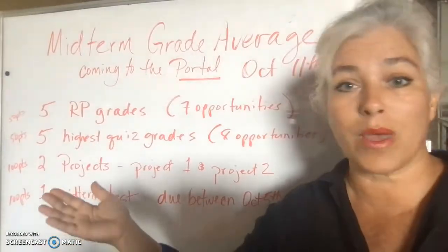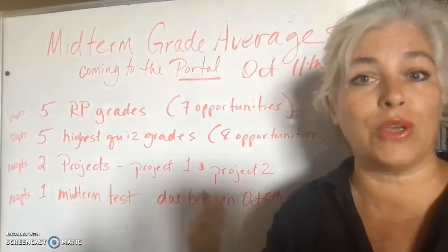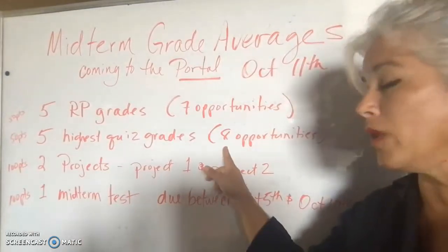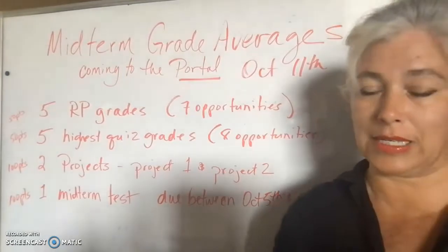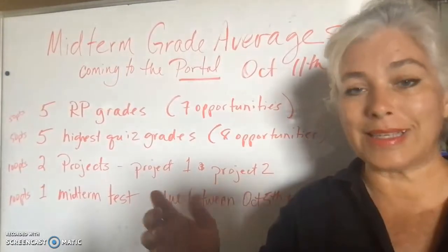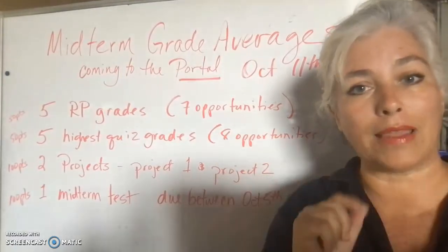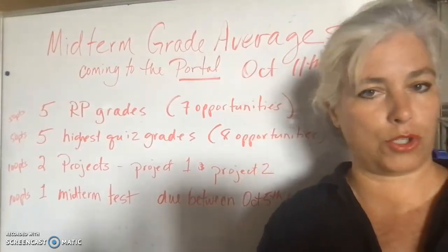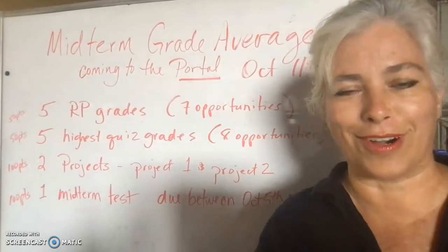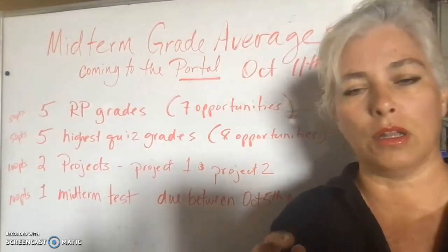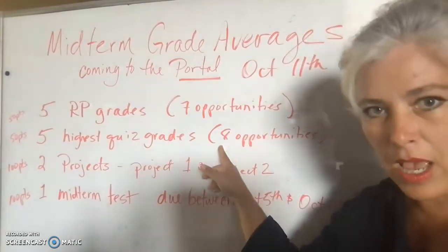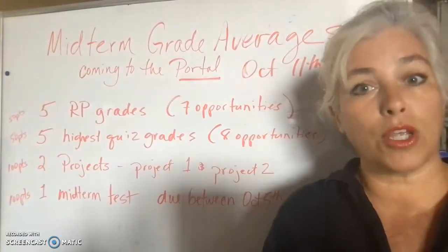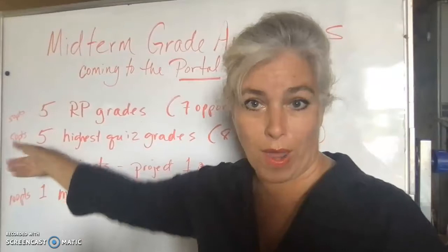With quizzes, I'm only going to use your 10 highest quiz scores at the end of the semester. At midterm, I cut that in half and I'm going to use the five highest quiz scores. By the time midterm rolls around, we will have had eight quiz opportunities, and I'm going to look at all eight and pick out the five that you individually made the highest scores on — not a predetermined range.